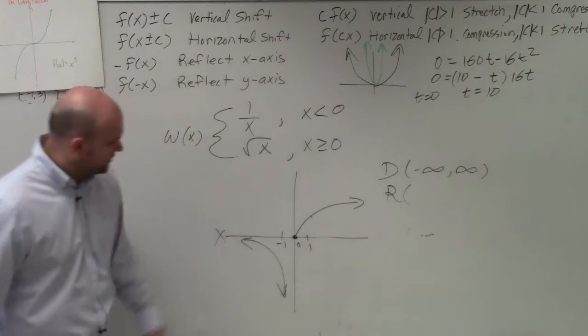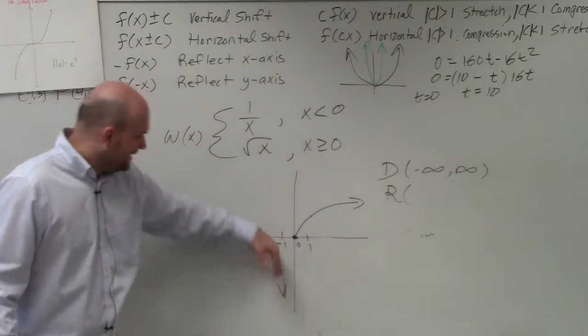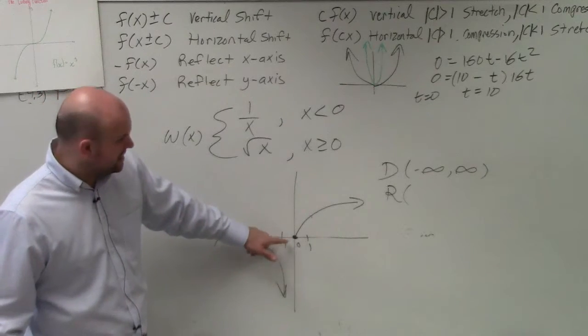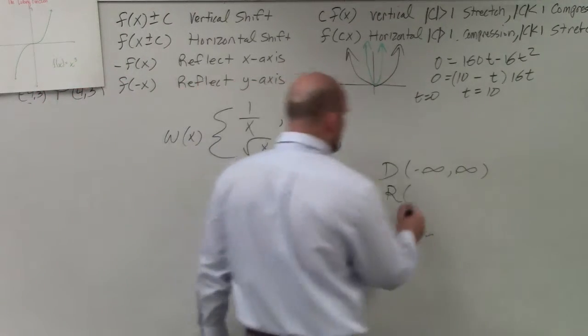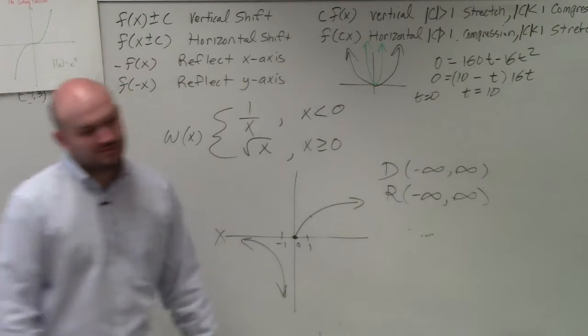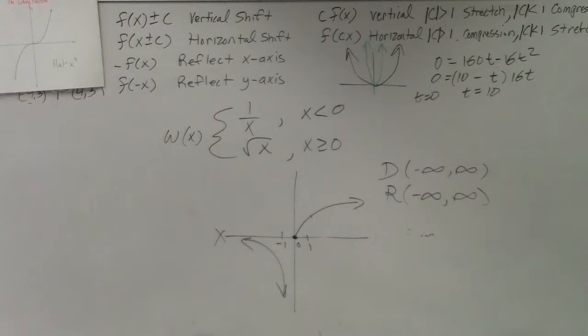The range you can look at, this graph goes infinitely down. Even though this doesn't go to 0, we have this function does go to 0, and that goes to infinity. So the domain here, and range, is negative infinity to infinity, and the domain is negative infinity to infinity, and the range is negative infinity to infinity.